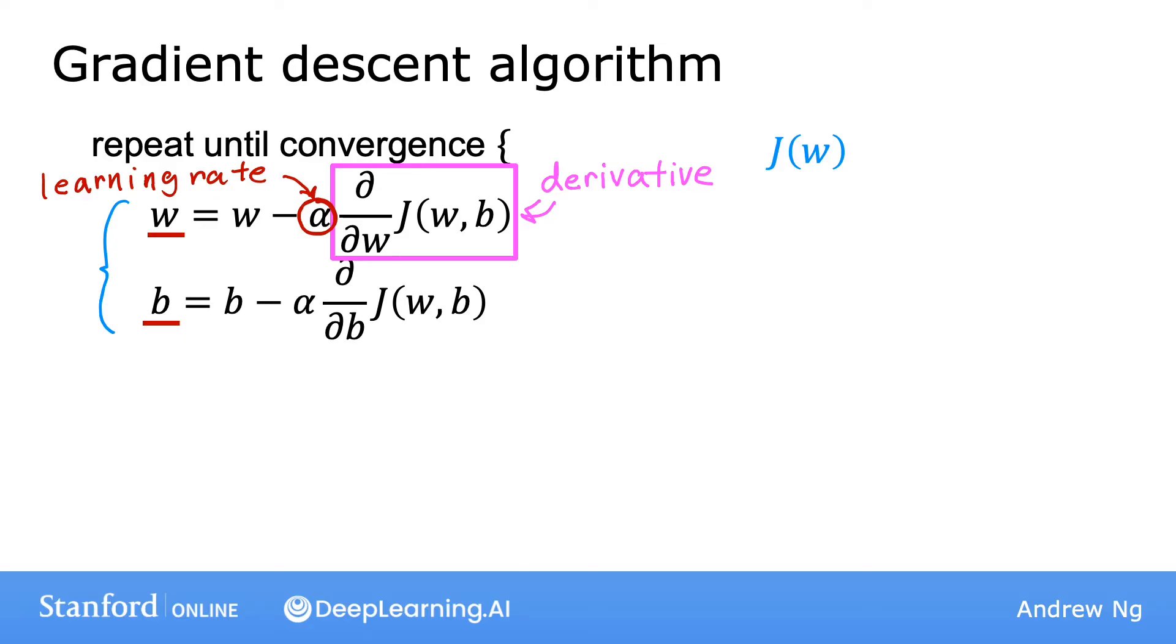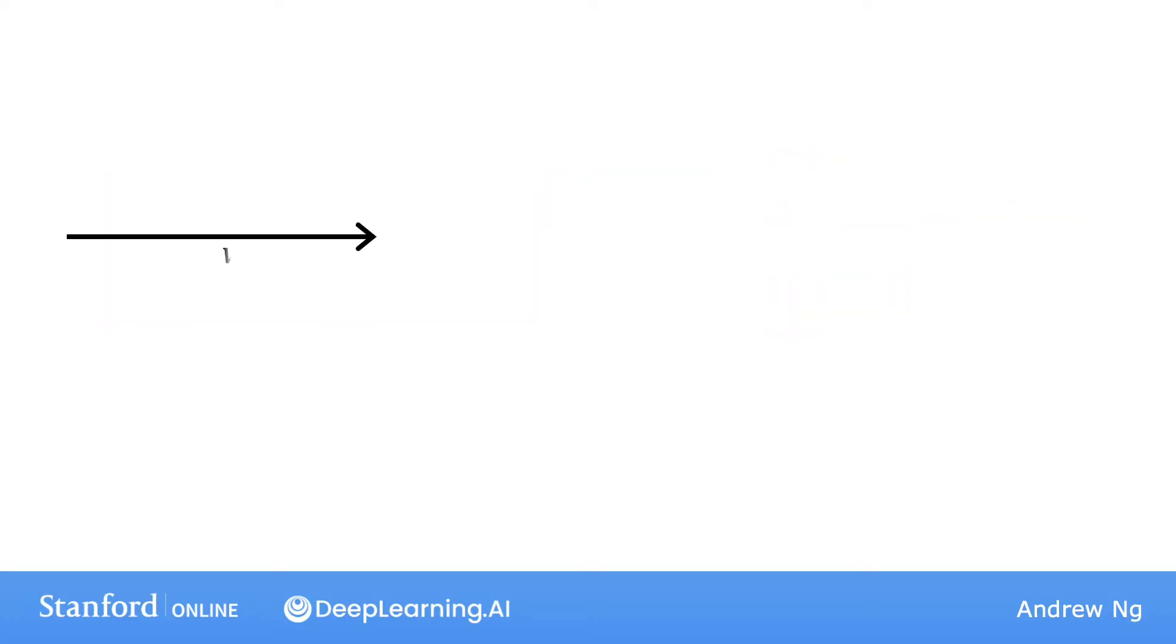Let's say you have a cost function J of just one parameter w, where w is a number. This means gradient descent now looks like this: w is updated to w minus the learning rate alpha times d/dw of J(w). You're trying to minimize the cost by adjusting the parameter w. This is like our previous example where we temporarily set b equal to zero. With one parameter w instead of two, you can look at two-dimensional graphs of the cost function J instead of three-dimensional graphs.